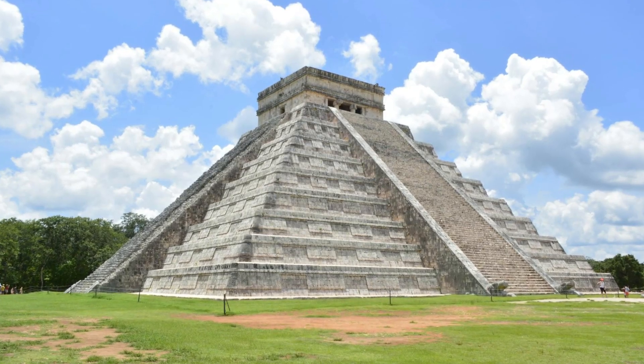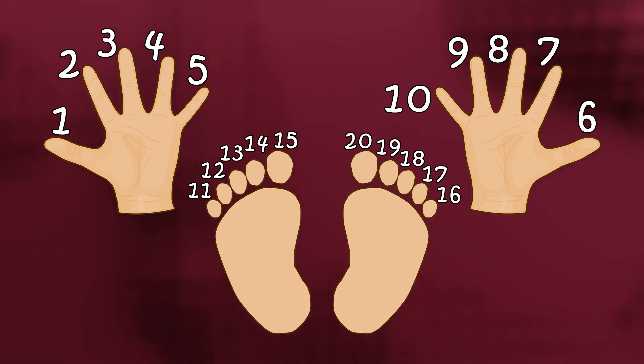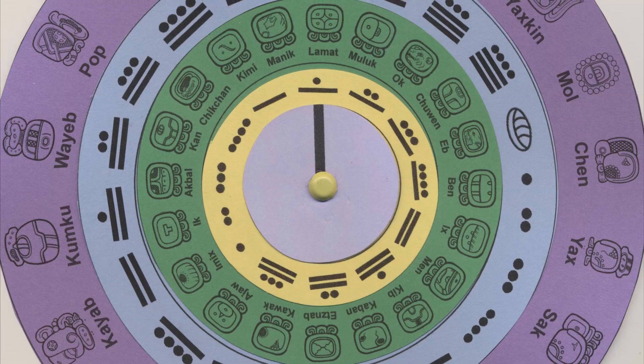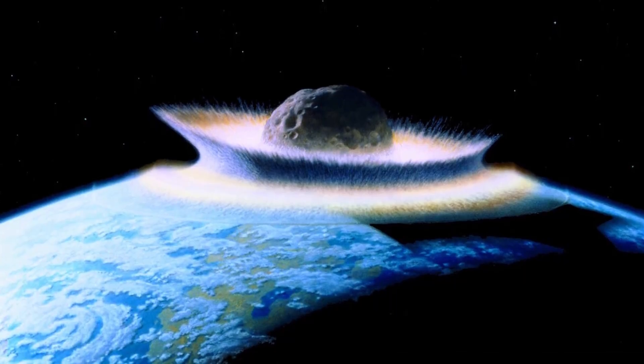The Maya of Central America counted in base 20, probably because like the Celts, they used both fingers and toes. Their calendars were incredibly precise, except when it came to predicting the end of the world.